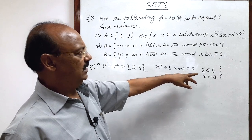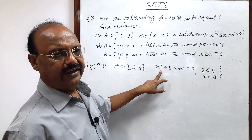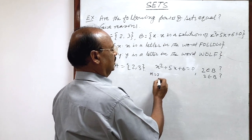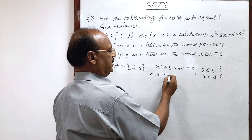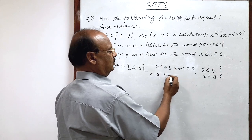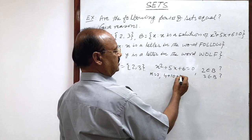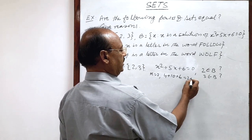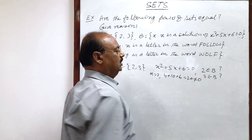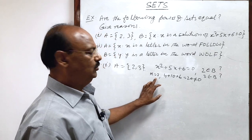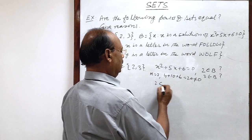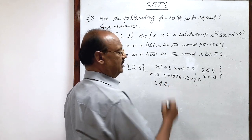So x = 2 does not satisfy this equation. Because if you put x = 2, we get 2² that is 4, 5 times 2 that is 10, plus 6, which equals 20. This is not equal to 0. So x = 2 does not satisfy this equation, and 2 does not belong to set B.